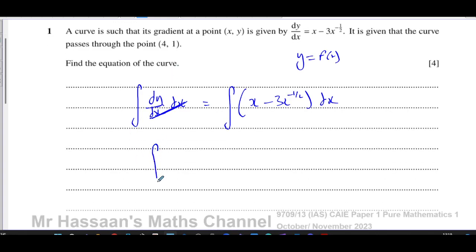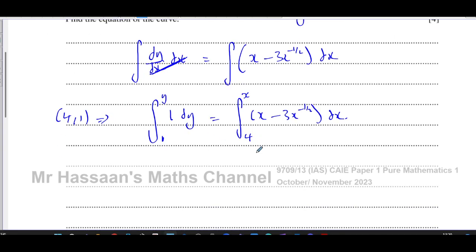We can do something quite clever. We're trying to find what y is in terms of x. The answer has to be y equals some function of x. We know that when y equals 1, x equals 4, because it goes through the point (4,1). We can integrate this as a definite integral, which we learned about in P1 of Cambridge. That way we don't have to put the plus c. The c will automatically be found for us.